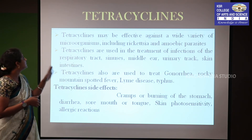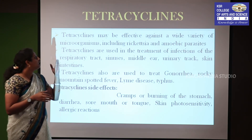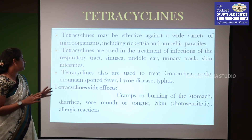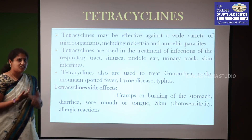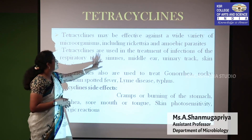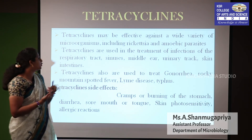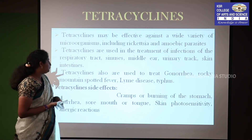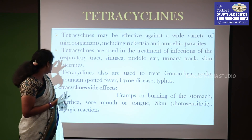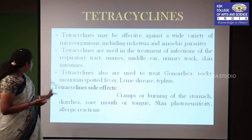Next, tetracycline. Tetracycline is effective against a wide variety of microorganisms including rickettsiae and amoebic parasites. Tetracyclines are used in the treatment of infections of the respiratory tract, sinuses, urinary tract, skin, ear, and intestine, as well as gonorrhea, Rocky Mountain spotted fever, and typhus. Side effects include cramping or burning of the stomach, diarrhea, sore mouth or tongue, skin photosensitivity, and allergic reactions.